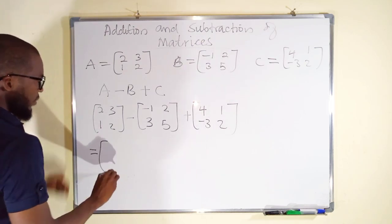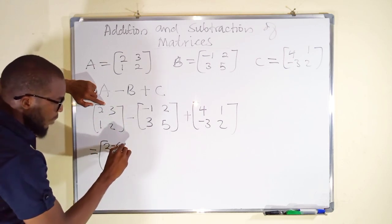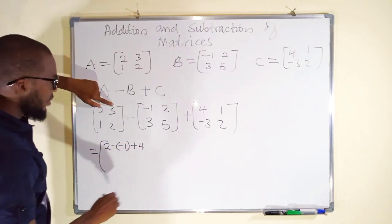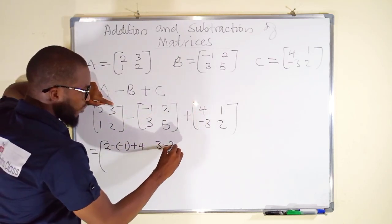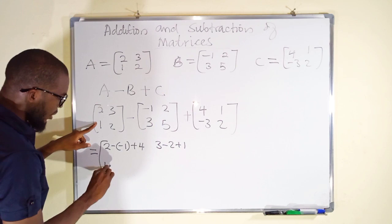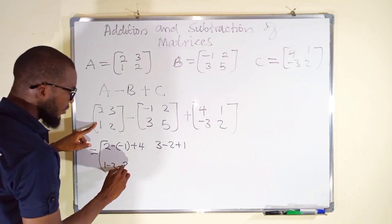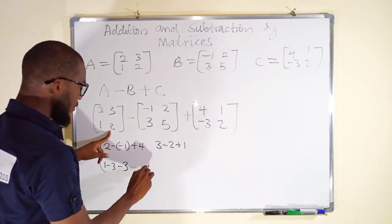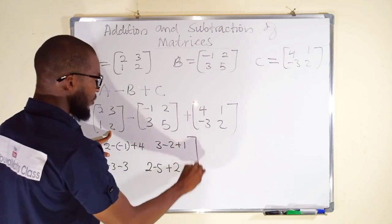Carrying them all along: first element is two minus one plus four. Then one minus three plus one. Second row: three minus two plus one. Then two minus five plus two. Note that where we have minus sign followed by minus, two negatives make a positive. We close the matrix and simplify to obtain our final result.